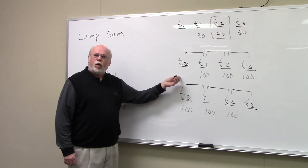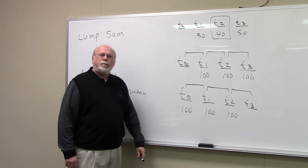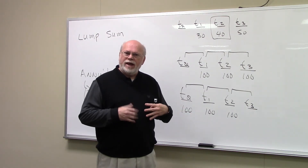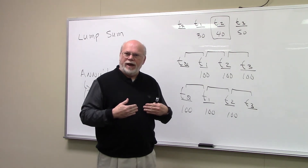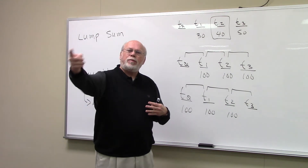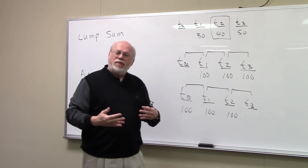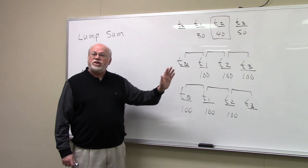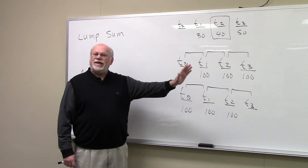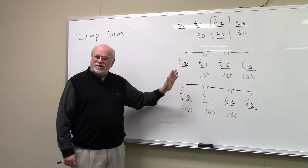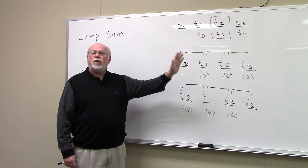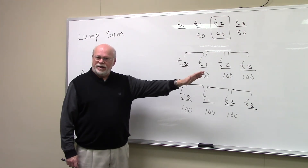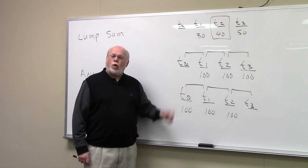An example of an ordinary regular annuity is a bank loan. If you go to the bank and borrow money — car loan, home loan, whatever — the payments don't start today. They give you the loan and your payments start a month later. So if you borrow money for a house on a 30-year mortgage, you're going to make 360 payments, and all those payments come at the end of every month. T360 — 360 months from now, 30 years from now — your last payment comes at the end of that month. A bank loan is an example of an ordinary regular annuity.